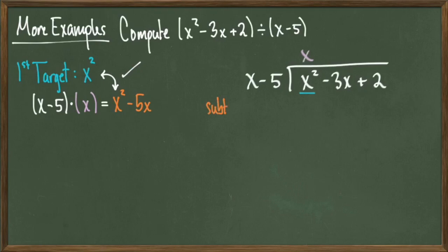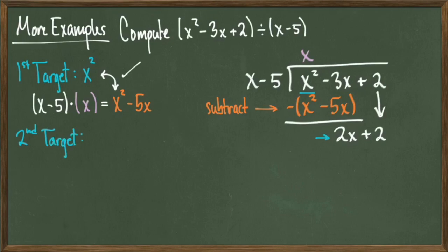Notice that multiplying x minus 5 with x gives us a product of x squared minus 5x. Therefore our target shows up, so we can place an x in the quotient spot and subtract the product x squared minus 5x from the polynomial we're dividing into. We get an answer of 2x, and then we drop down the 2. This gives us a new target of 2x, therefore we're going to multiply x minus 5 by something to give us 2x.